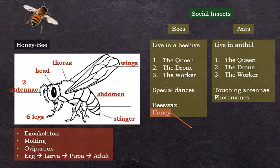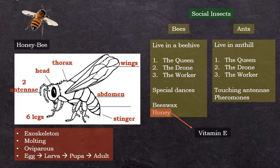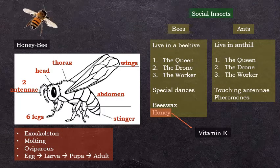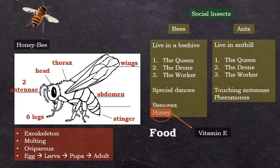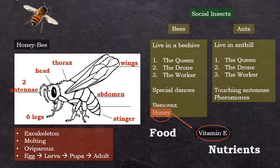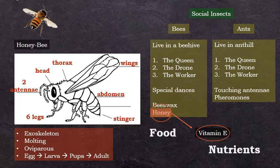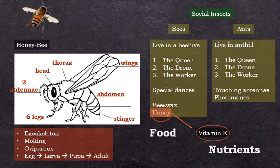Bees provide us with beeswax and with honey. Honey is a kind of food and it is a source of vitamin E, which is a type of nutrient.